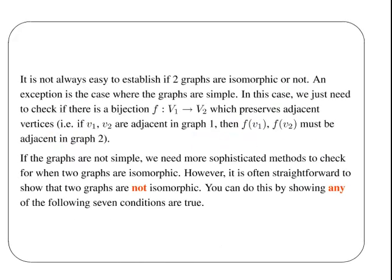It's not always easy to establish if two graphs are isomorphic or not. An exception to this case is the cases where graphs are simple. In this case, we need to check if there is a bijection, a rule that links the vertices of one graph to another, which preserves adjacent vertices such that if a pairing of vertices are adjacent in one graph, then the corresponding vertices in the other graph are also adjacent.